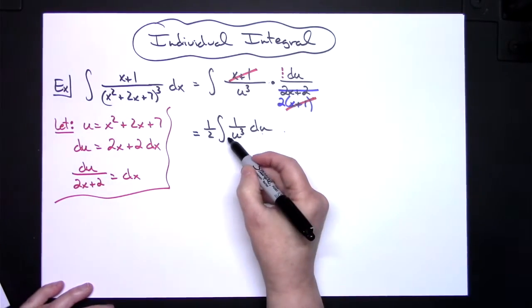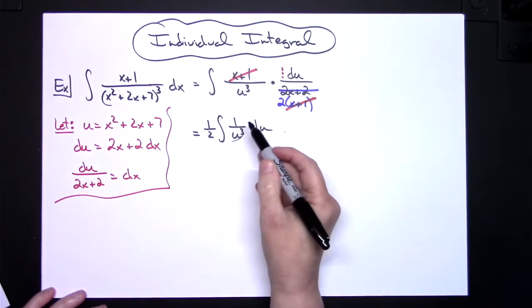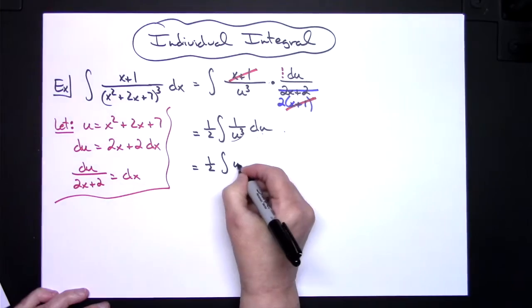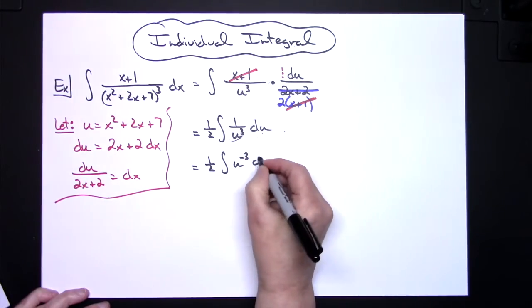Now we want to move this u to the third up to the top using the laws of exponents, so we'll have 1 half the integral of u to the negative third du.